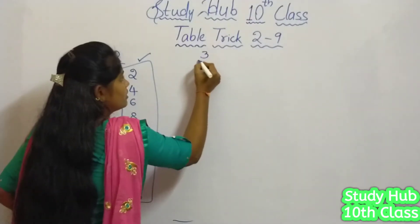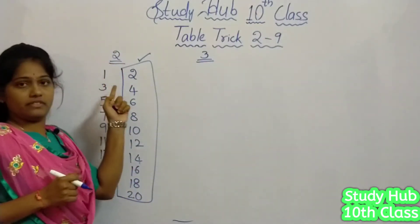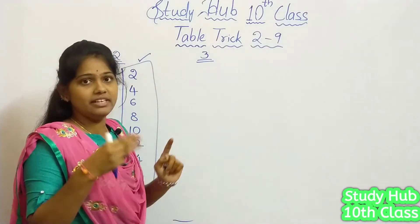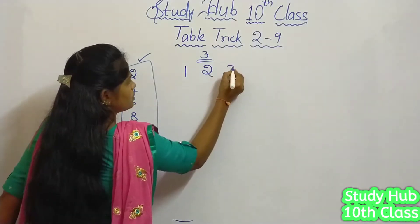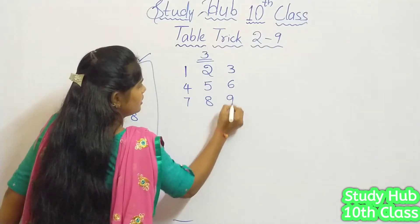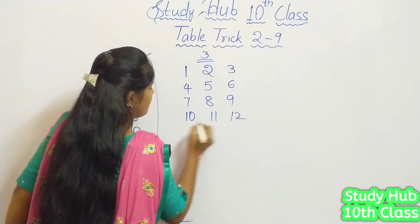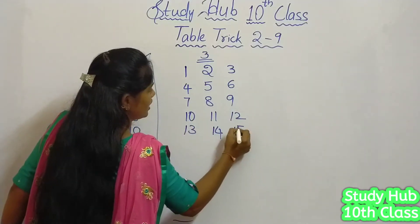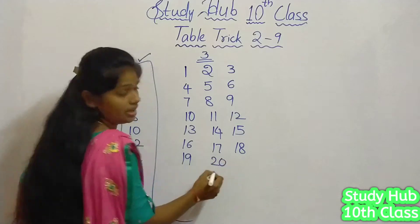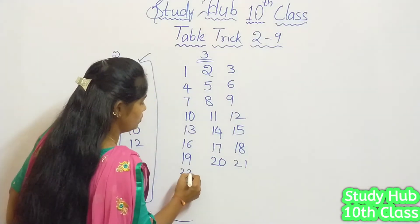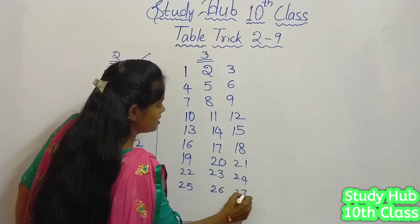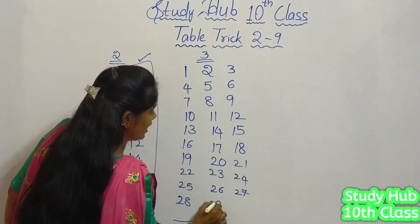Next, coming to 3. As we have written 2 columns for the 2 times table, in the same way for the 3 times table we have to maintain 3 columns. We write 1 through 30 across those 3 columns, filling numbers 1, 2, 3... all the way to 29 and 30.